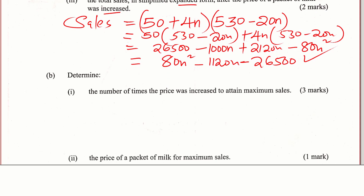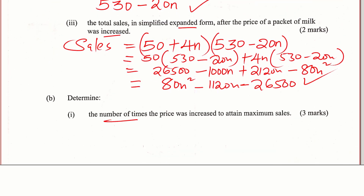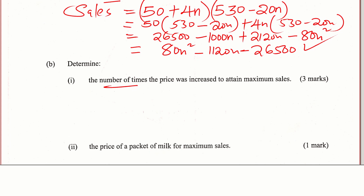Part b, determine the number of times the price was increased to attain maximum sales. Remember, the number of times is represented by n. There is a very important concept being used here. To find the number of times the price was increased to attain maximum sales, we are going to apply calculus.